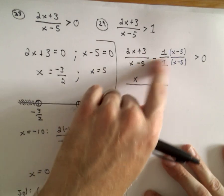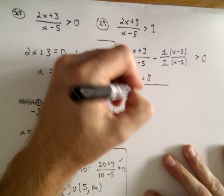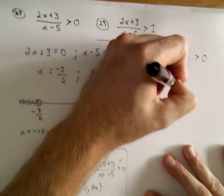And again, we still have the x minus 5 in the denominator. So I'm going to go a little bit faster on this one.